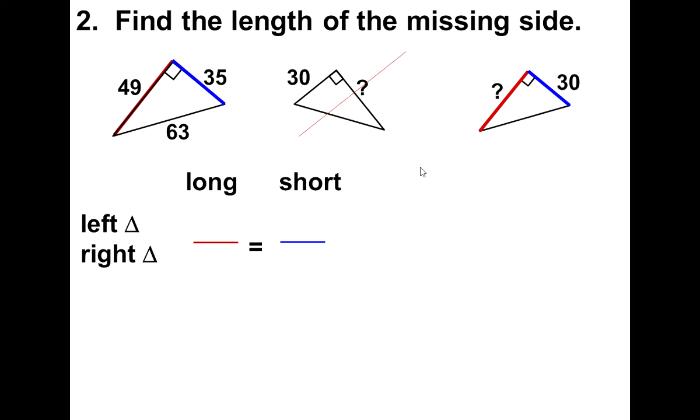I could compare my left triangle to the corresponding side in the right triangle, 49 over n. The left triangle and the corresponding side in the right triangle, 35 over 30.